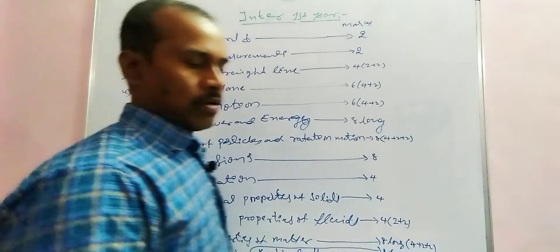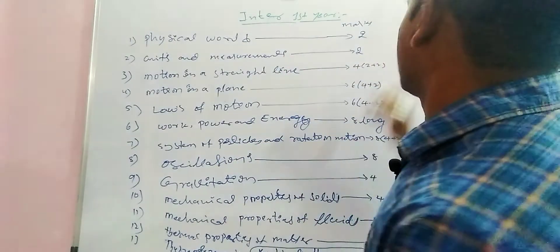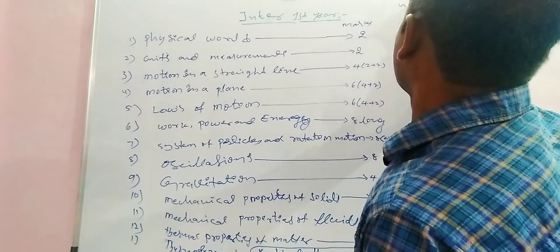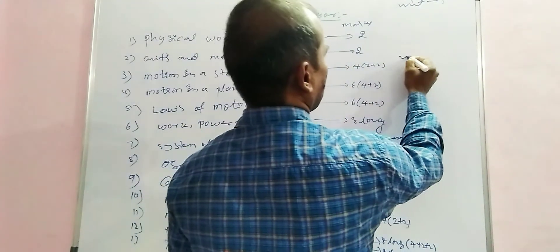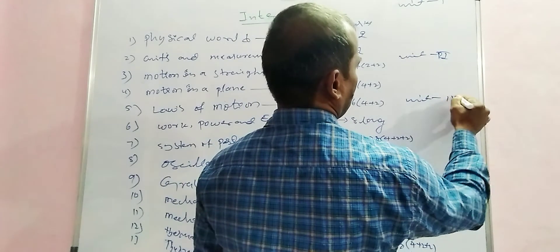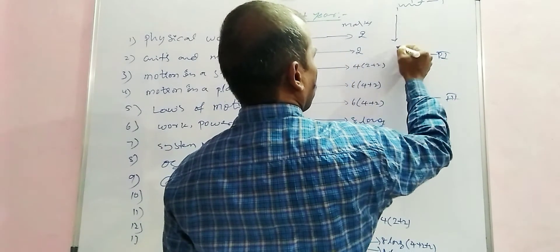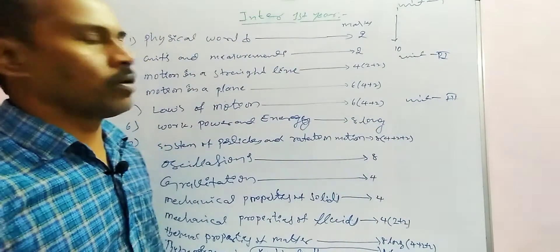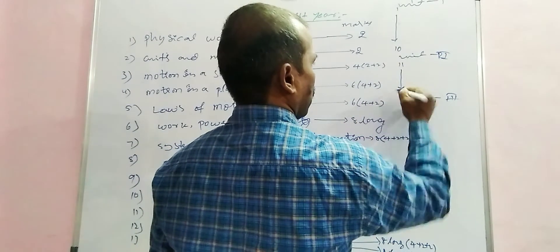Now let us look at how the question paper is structured. The paper has three units. Unit one covers questions 1 to 10, unit two covers questions 11 to 18, and unit three contains long answer questions. This is how the paper is divided into three units.